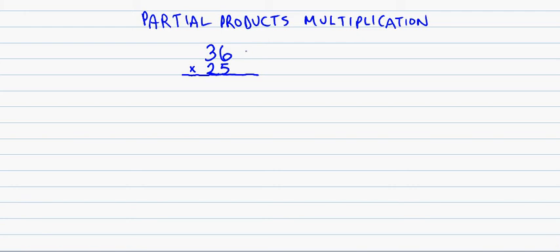This requires us to think of each of these factors in expanded form. So we're going to think of this 36 as 30 plus 6, and we're going to think of the 25 as 20 plus 5. And so these are the two things that we're really multiplying. We're multiplying 30 plus 6 times 20 plus 5.